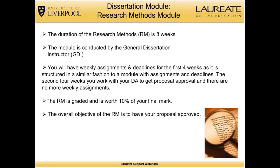The research methods module is eight weeks long and is conducted by the general dissertation instructor, the GDI. You will have weekly assignments and deadlines for the first four weeks, structured similarly to a regular module. In the second four weeks you work with your DA to get proposal approval, with no more weekly assignments, though the same time commitment is required. The research methods module is graded and worth 10% of your final dissertation mark, and the overall objective is to have your proposal approved.